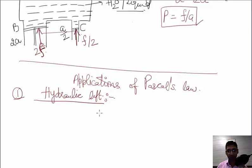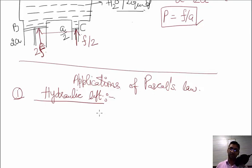Force multiplier means that by applying a small force, you can lift a greater weight. But remember, energy conservation is always applicable — there is no magic here. You cannot input less energy and get more energy out. Force is multiplied, not energy.